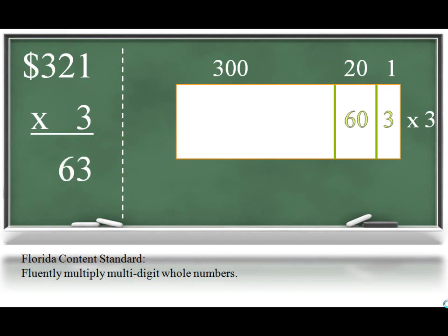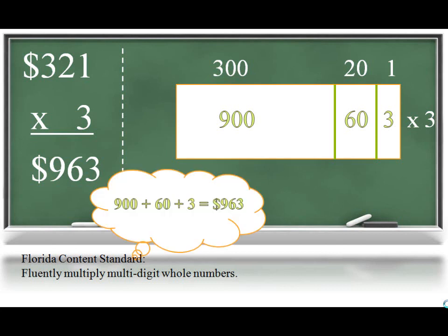3 groups of 2 tens is 6 tens, or 60, and 3 groups of 300s would be 900s, which would give you $963 as the solution. Students should then be able to relate this model to their understanding of how the traditional algorithm works.